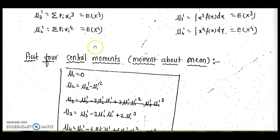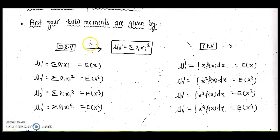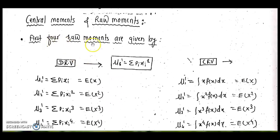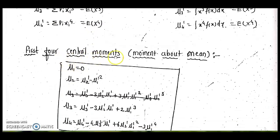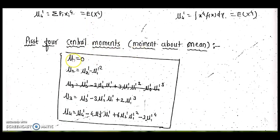Using the four raw moments, we can find the central moments. The first four central moments are denoted mu_1, mu_2, mu_3, and mu_4 — without dashes — whereas raw moments are denoted with dashes: mu_1', mu_2', mu_3', mu_4'.